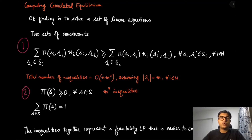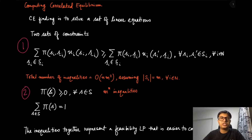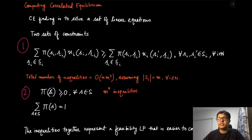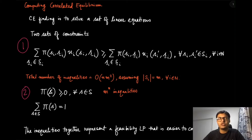Apart from the fact that correlated equilibrium models certain real-world situations much better than mixed strategy Nash equilibrium — as we discussed in the case of two friends watching a football or soccer game, or in the case of the traffic signal game —